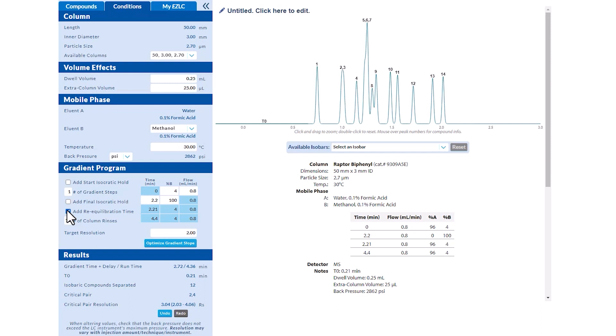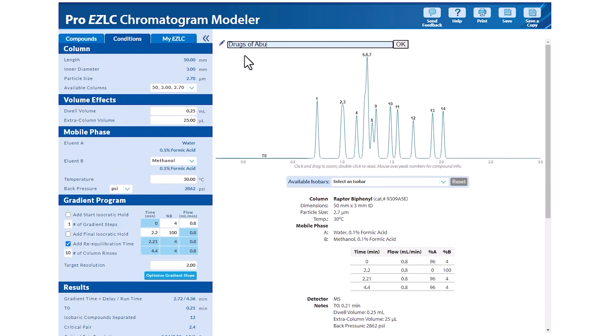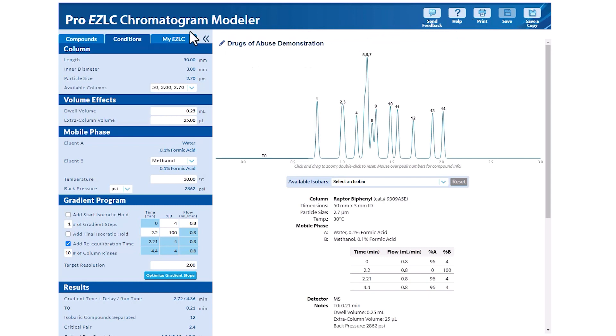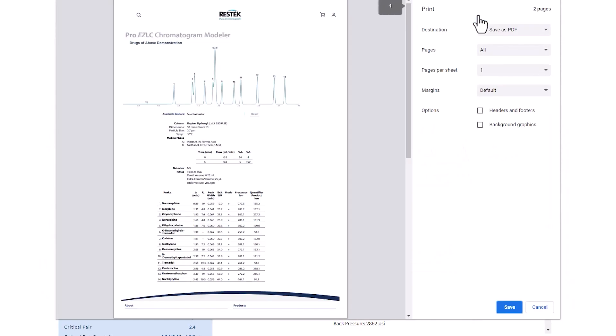Once you're satisfied with the simulated chromatogram and resolution values, you can name and save your model. This keeps it within your Restek account to reference later. You can also print it out for immediate use.